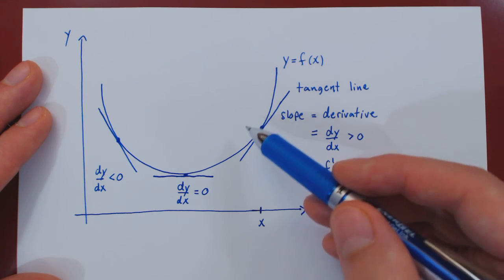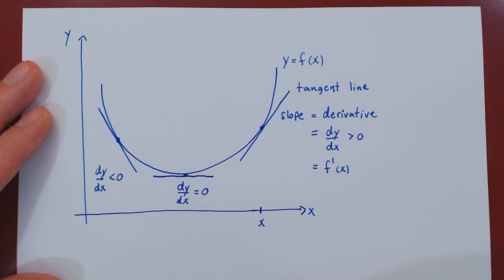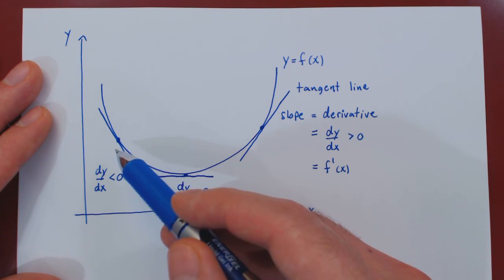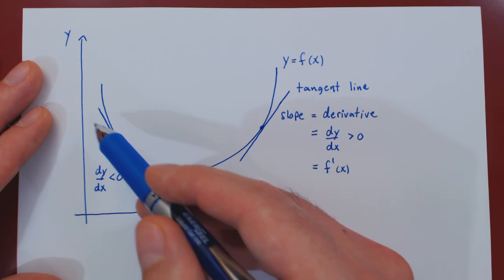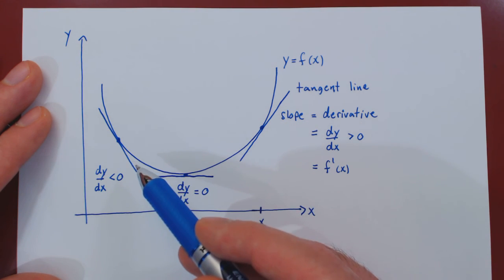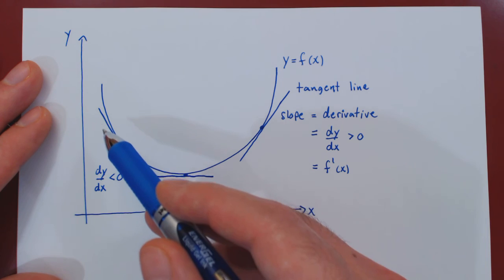If at a point the derivative of the function is negative, then around this point the function is decreasing, just as the tangent line.